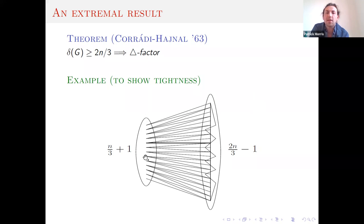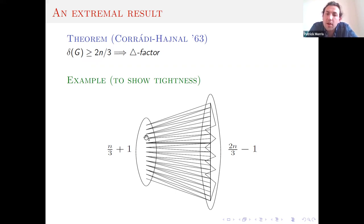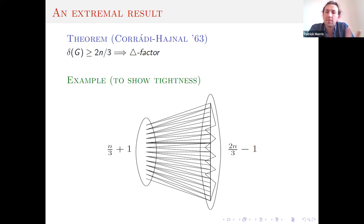The tightness example is nothing more than a complete graph where, on the left, we've taken a set of size n/3 + 1 and removed all the edges within it — so this is an independent set. All other edges are present. The way to see this has no triangle factor is that every triangle can only take one of the vertices on the left, but in a triangle factor we have n/3 triangles, so there are simply not enough triangles to cover this set.